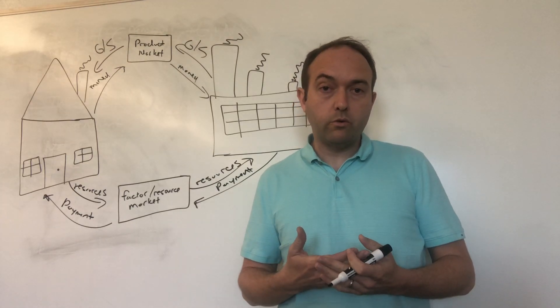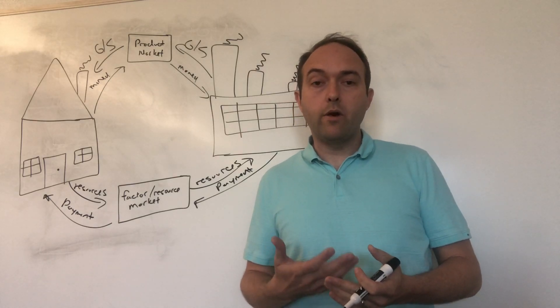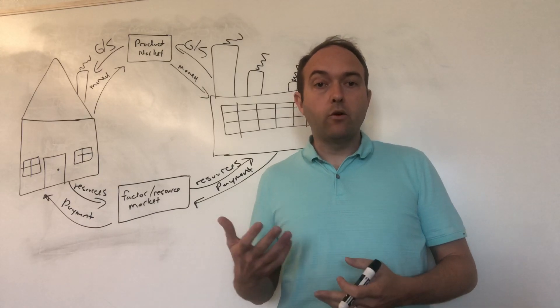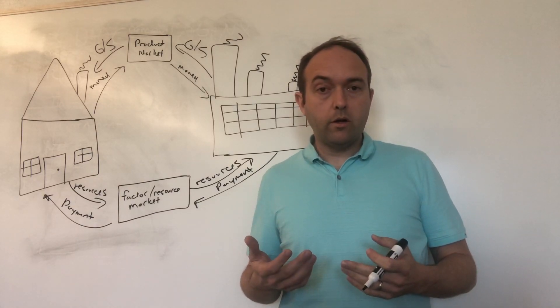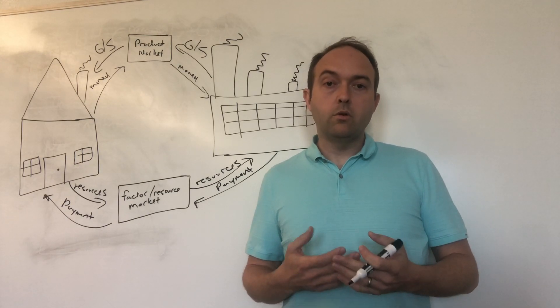Then firms use those resources to create goods and services that they'll then sell to other households. And thinking about that interaction of households and firms in both the resource markets and in product markets is our circular flow diagram.